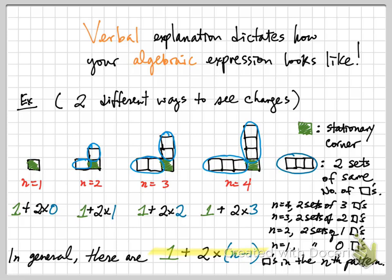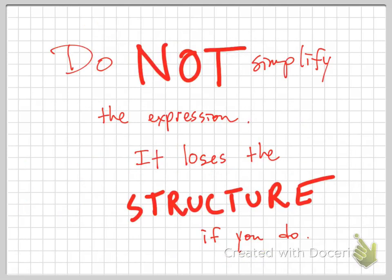As soon as I provide the n value — for example n equals 1,000 — I can immediately find how many squares are in the 1,000th term. You do not want to simplify this expression unless instructed to, because as soon as you do, you lose the structural information on how you visualized this pattern. Since everyone visualizes the sequence differently, simplifying removes that information about how you see it.